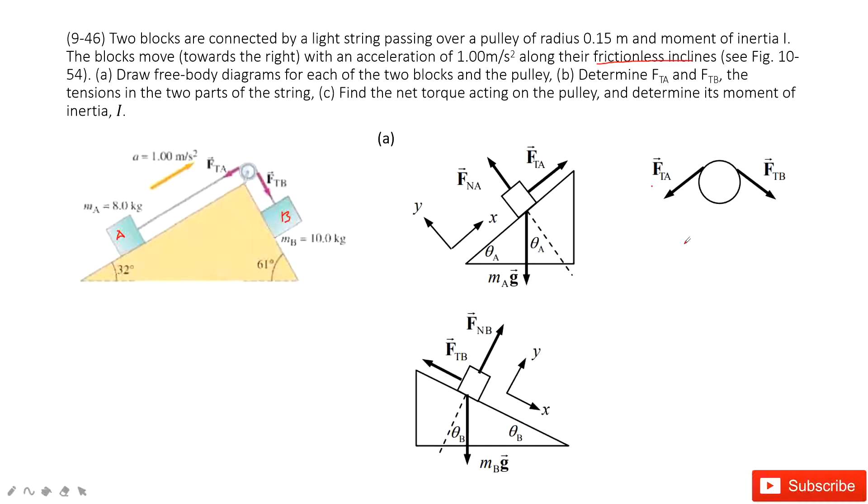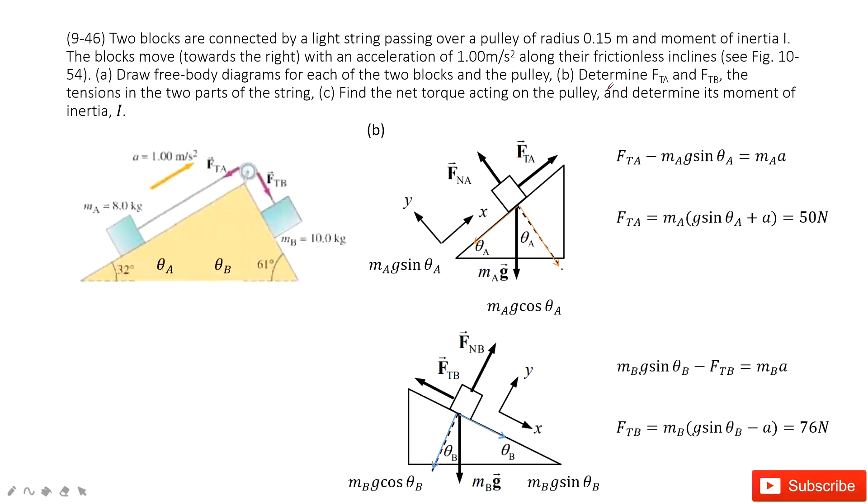And the next one, we need to determine FTA and FTB. How can we decide it? What quantity is given? First quantity is mass A is given, mass B is given, theta A is given, theta B is given, acceleration is given, right? So first one, we can project the gravity A in two components.